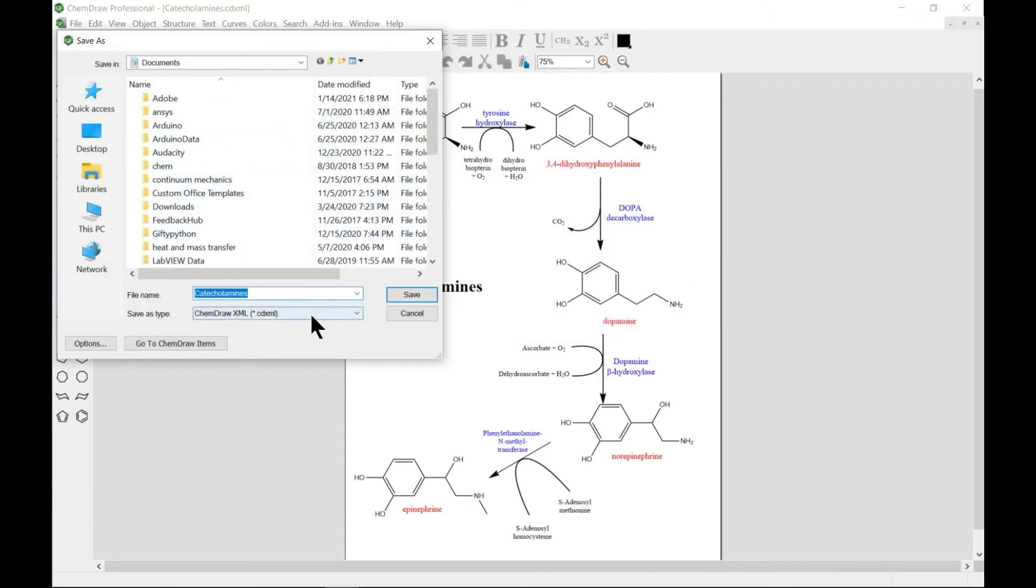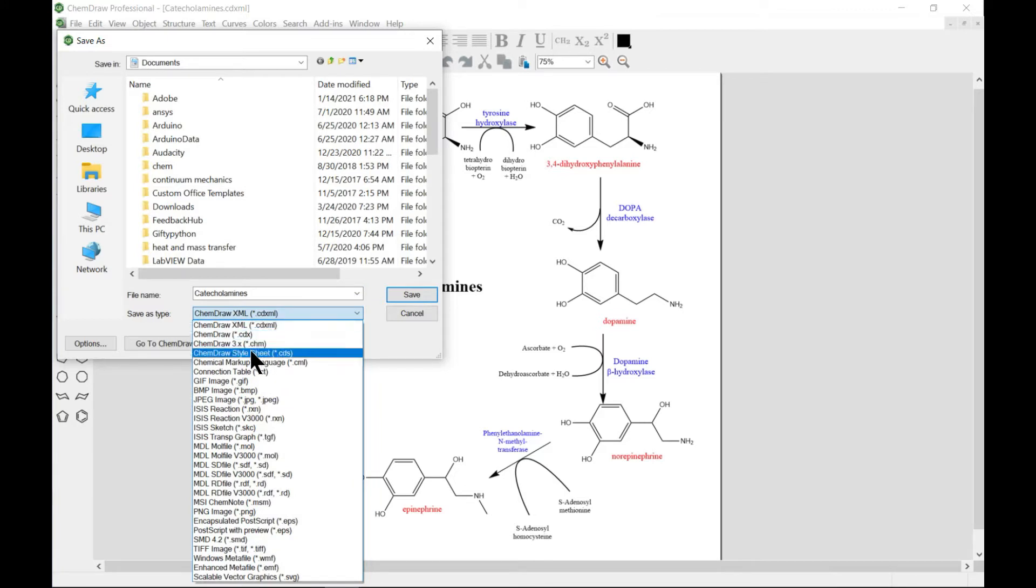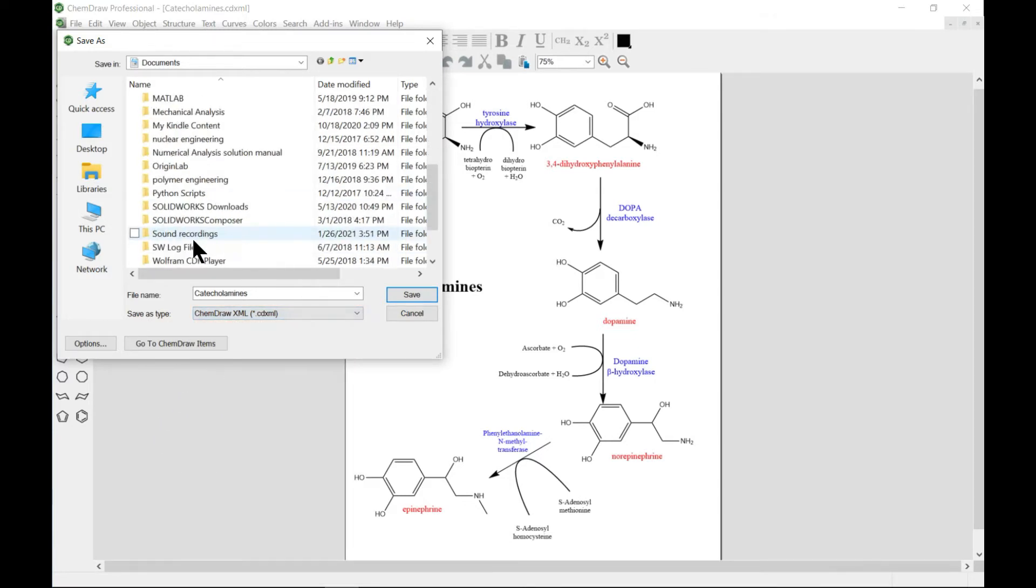You have the file name and you can choose the file type as you need. You can choose a GIF, JPG, and all these files as you need. You'll have something like that, and just change the file name.